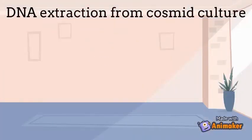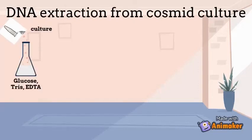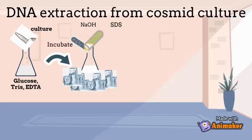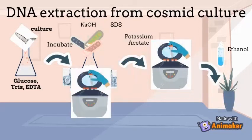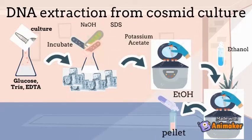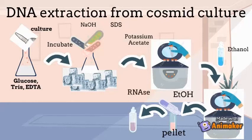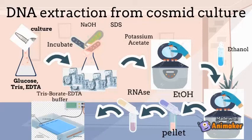Alkaline lysis miniprep preparation will be conducted. The cultures that survive on the ampicillin plate are harvested in microcentrifuge tubes and resuspended with glucose, Tris, and EDTA, then incubated. NaOH and SDS are added and mixed on ice. Pre-cooled potassium acetate is added and centrifuged. Ethanol is added to the supernatant and centrifuged. The pellet is washed with ethanol and some portions are taken and digested with agarose, then analyzed on horizontal agarose gels in Tris-borate-EDTA buffer.